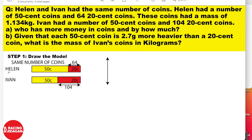First, you have to draw a model. This is how your model will look: Helen with her 50-cent and 20-cent coins. Since we know Helen has 64 twenty-cent coins, we put 64 at the 20-cent section. Ivan has a certain amount of 50-cent coins but 104 twenty-cent coins, so we put 104 at the 20-cent section. Remember, we're talking about the number of coins, not the value. If we draw a dotted line, we get the exact same amount of 50-cent coins from Helen and 20-cent coins from Ivan equal.